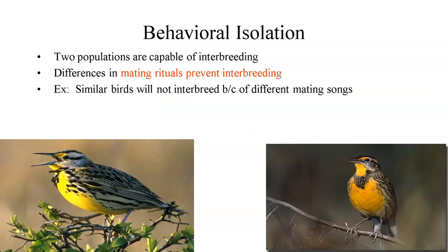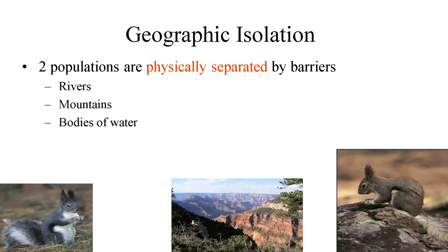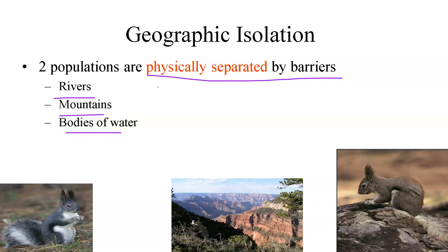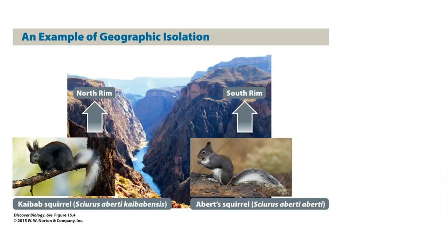In your book they talk about behavioral isolation — mating rituals, like different species of birds singing different songs when trying to attract a mate. Geographic isolation is when organisms are physically separated by barriers like rivers, mountains, or huge bodies of water. Here's an example of geographic isolation.